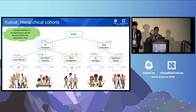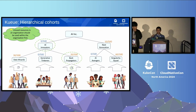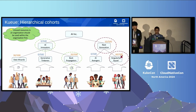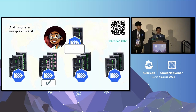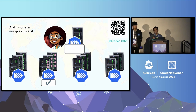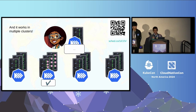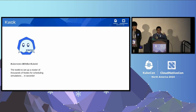Kueue also works in a multi-cluster environment. There's a link available for the keynote featuring CERN if you want to see it. Fair sharing and hierarchy are currently exclusive to each other, but future versions coming soon will have fair sharing for the whole organization.